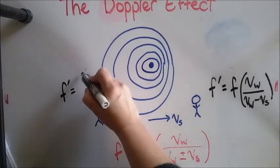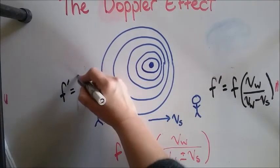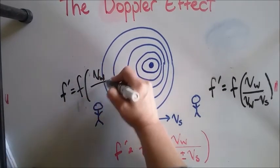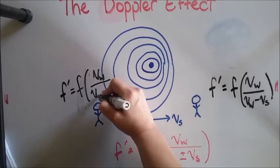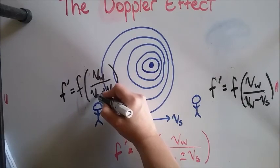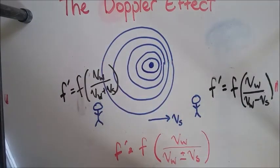This is going to be the frequency multiplied by the ratio where it adds together, because the wave is going to appear to be moving away from you.